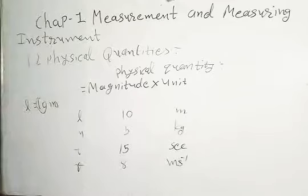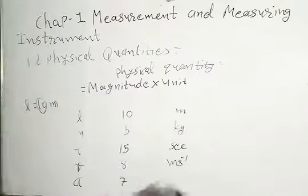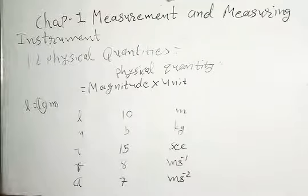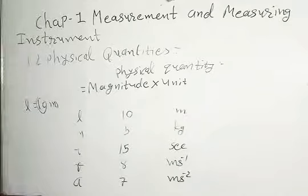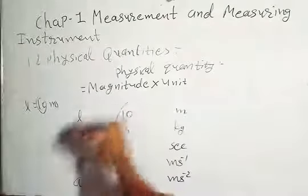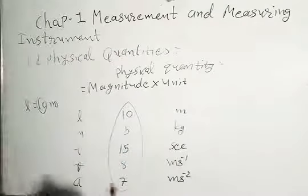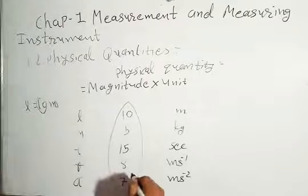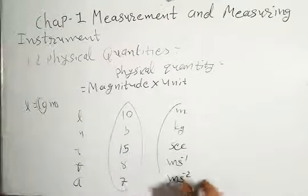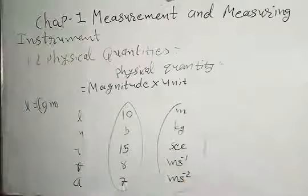For example, if acceleration is 7, then its unit is meter per second squared. So for all physical quantities, numbers alone are meaningless — we have to write them along with their units.